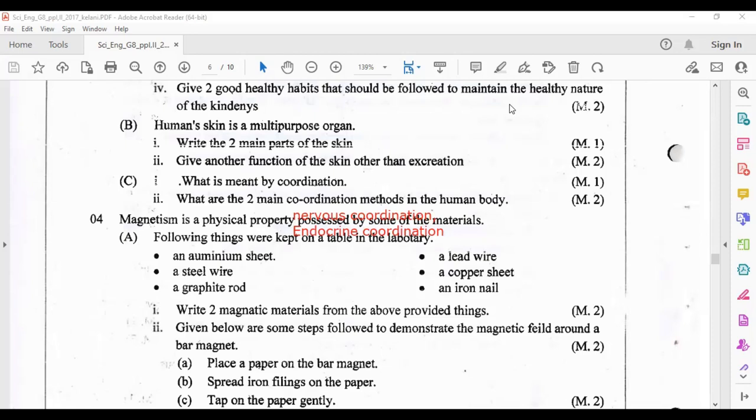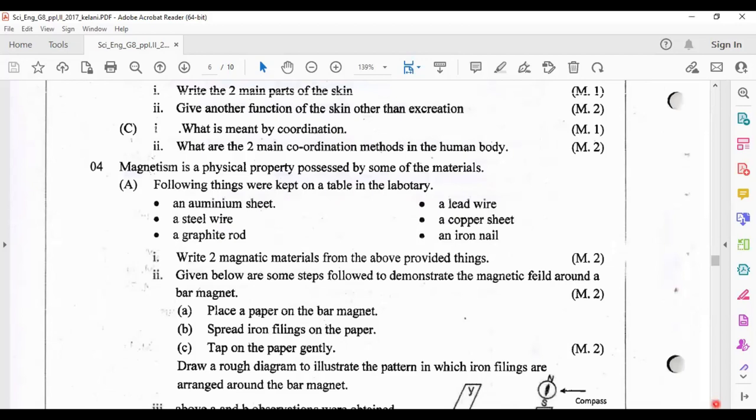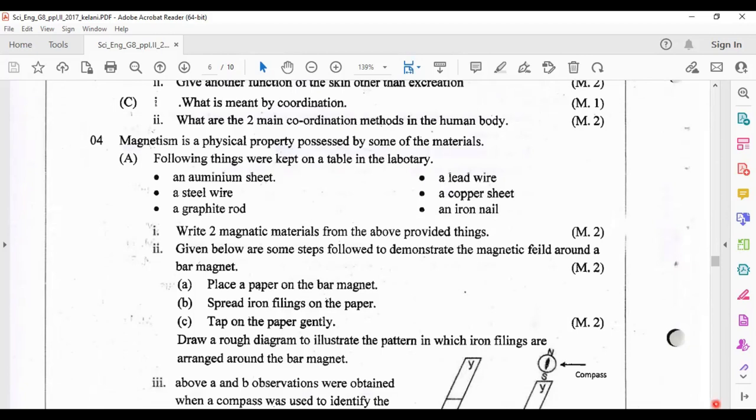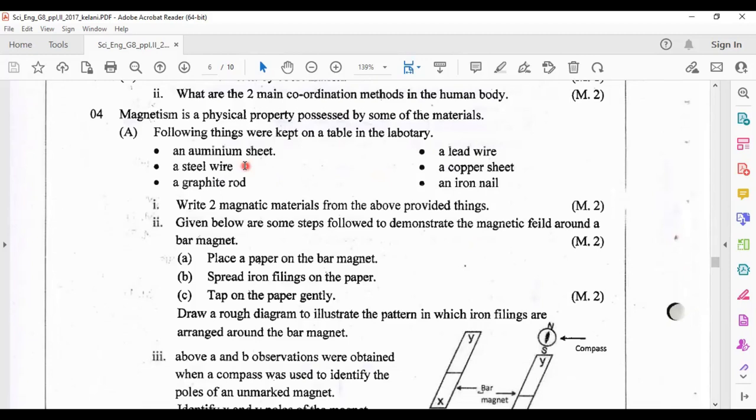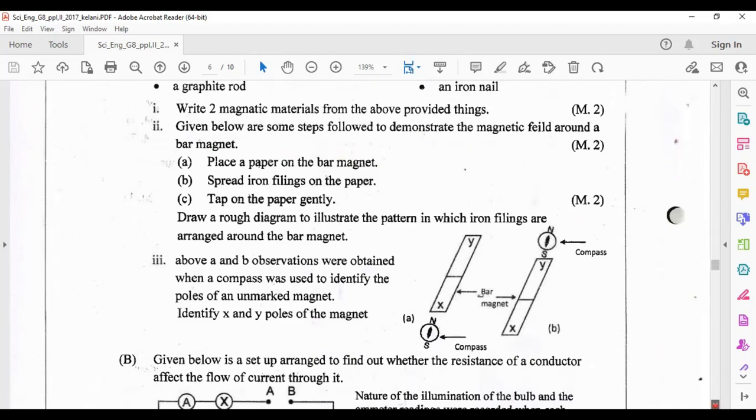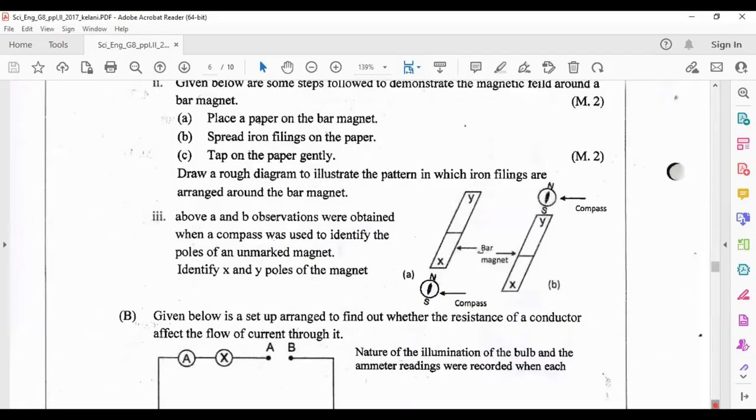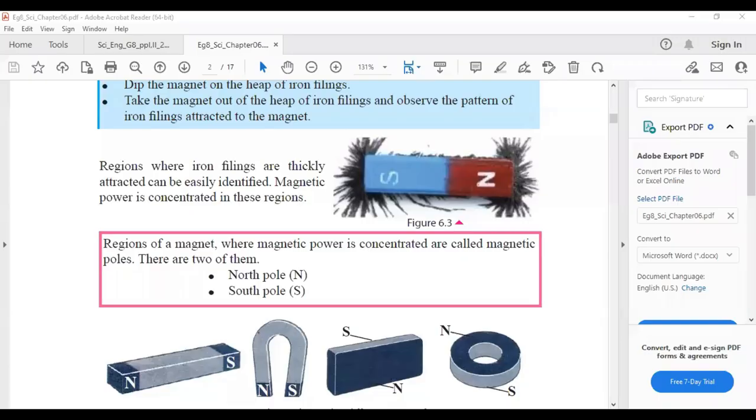Question number four: magnetism is a physical property possessed by some of the materials. Following things were kept on a table in the laboratory. Write two magnetic materials from the above provided things. The answer is a steel wire and an iron nail. Question number two: given below are some steps followed to demonstrate the magnetic field around the bar magnet. Draw a rough diagram to illustrate the pattern in which iron filings are arranged around the bar magnet. This is how you can see when you spread the iron filings around the bar magnet. Near the south pole and north pole there are more iron filings.